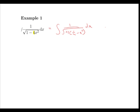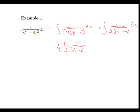Now we can simplify this as root 4 gives us 2. So we have the integral of 1 over 2 by root of a quarter minus x squared dx. And now we can bring the 2 outside the integral to give us a half the integral of 1 over root of a quarter minus x squared dx. And finally, a quarter is simply a half squared, so we can rewrite this as a half the integral of 1 over root of a half squared minus x squared.